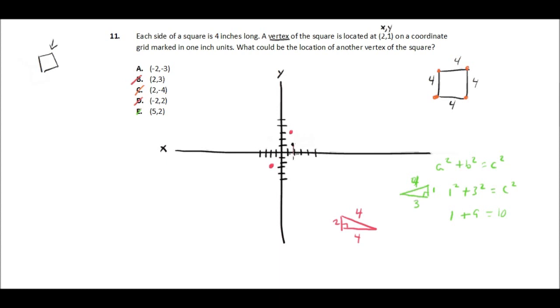Well, if we went down 4 this way, that would put us at 2, negative 3, and that would be a 4-inch side. And then we could go over 4 to negative 2, negative 3, which was the point we were just putting in. And then let's see if we go up again to negative 2, 1 and over to our original vertex, then we do have a square that has 4 sides. Sorry, has 4-inch sides. So it turns out that A is correct.